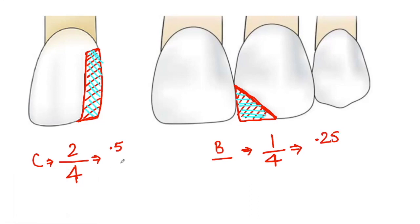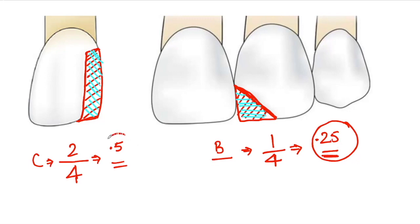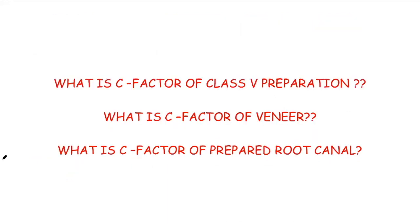As we know, the C factor is an important factor that can affect the developing stresses when composite restorations show polymerization shrinkage on curing. From these two values, we can say that the triangular-shaped class 4 cavity, since it has a lower C factor value, will have lesser stresses from polymerization shrinkage compared to the rectangular-shaped class 4 cavity. I hope how to calculate the C factor for class 3 and class 4 composite restorations is clear. In the next video, we'll be calculating the C factor for class 5 preparation, veneer, and prepared root canal. Thanks for watching. Take care and goodbye.